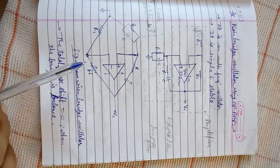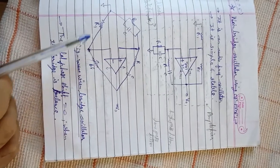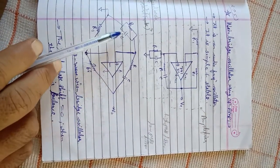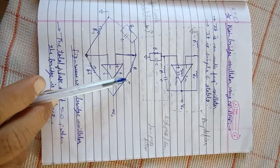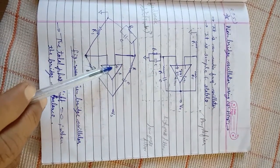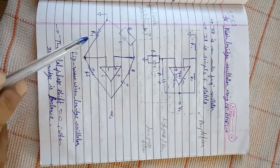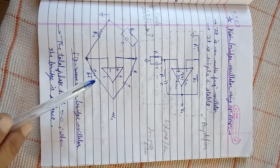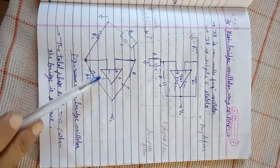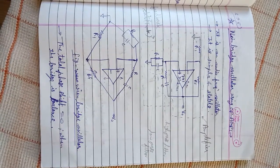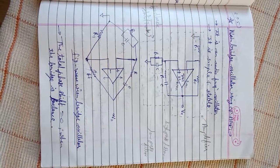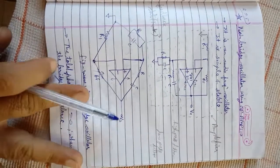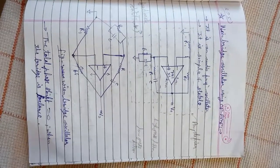That is the circuit diagram of Wien bridge oscillator। इस circuit diagram को rearrange करके bridge form में लिखा जा सकता है। इसमें R1 और Rf का concept होता है जो output से inverting terminal पर signal feed करता है। Similarly, RC parallel और RC series combination होता है जो bridge का काम करता है और non-inverting input terminal पर signal feed करता है। जब यह bridge balance होता है तो resonant frequency generate होती है और total phase shift zero degree होता है — यानि circuit का total phase shift zero degree होता है और loop gain sufficient होता है।